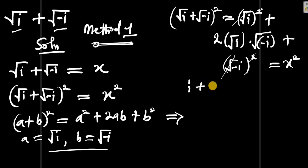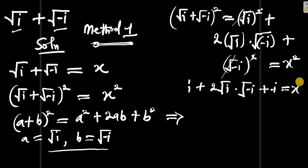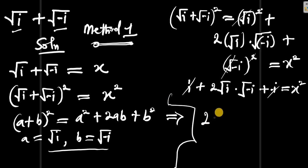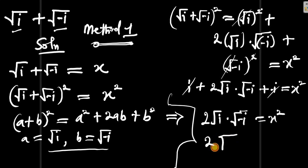We get i + 2·√i·√(-i) + (-i) = x². The i and -i cancel, leaving 2·√i·√(-i) = x². This is the same as writing 2·√(i · (-i)) = x².